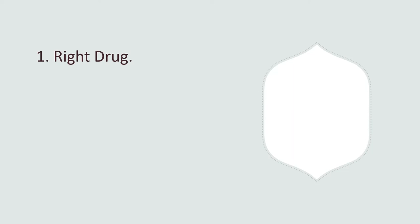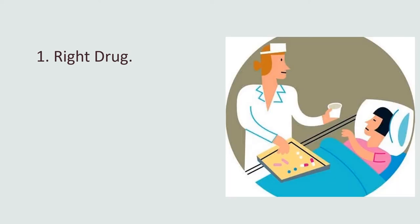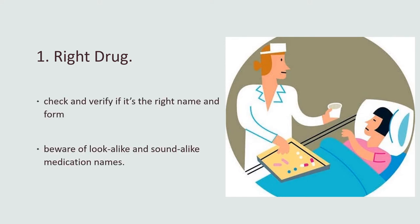First is the right drug. The first right of drug administration is to check and verify if it's the right name and form. Beware of look-alike and sound-alike medication names, as misreading medication names that look similar is a common mistake.